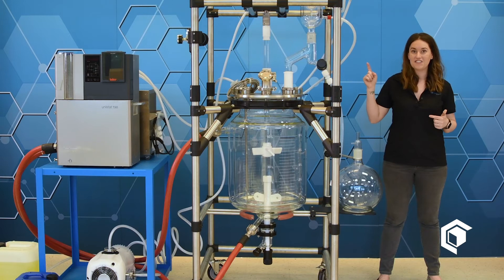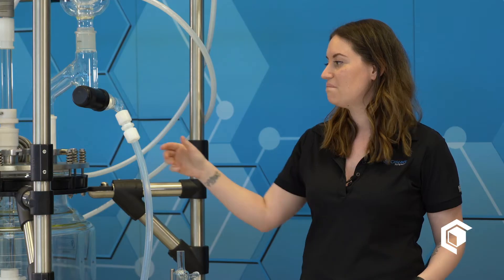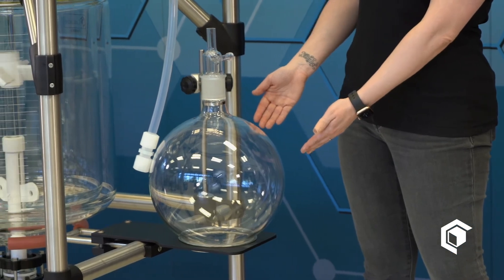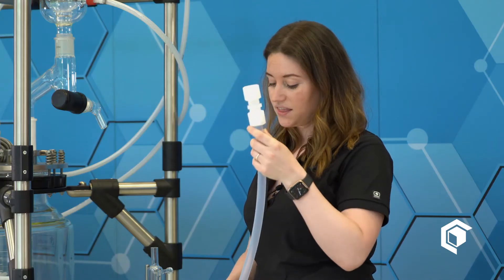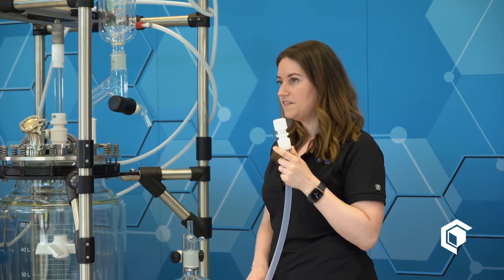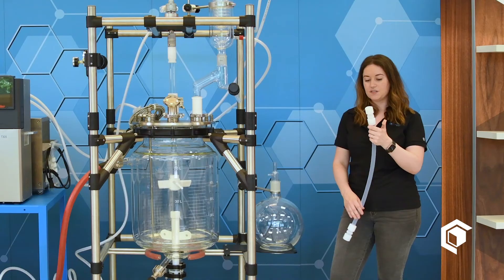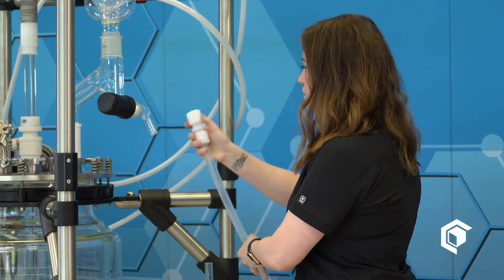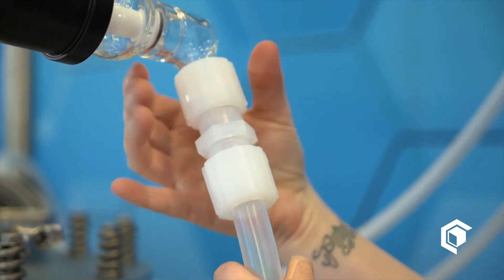So now that we have our condenser connected to the TCU, let's talk about the compression fitting and tube that connects the bottom of the condenser to the top of the receiving flask. This unit's about to be sent to a customer, so we can't cut this tube, but I wanted to show you how we assemble it. You take the compression fitting, which should be attached to the tubing, hook it onto the glass, and then hand tighten it.